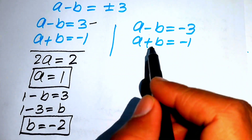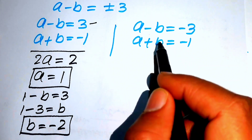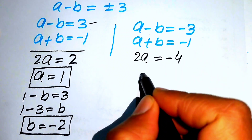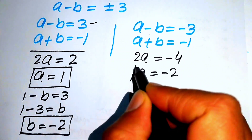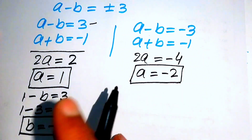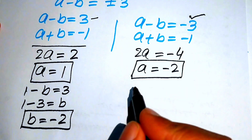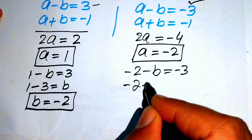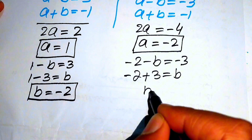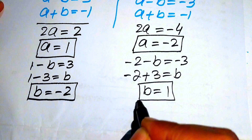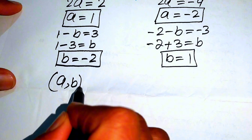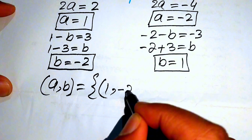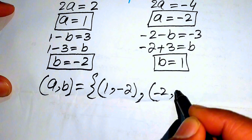For the second case, a minus b equals minus 3, combined with a plus b equals minus 1. Adding these equations, 2a equals minus 4, so a equals minus 2. Substituting back, minus 2 minus b equals minus 3, which gives b equals 1. The second solution pair is a equals minus 2 and b equals 1.